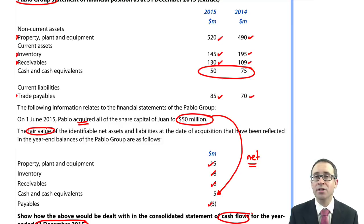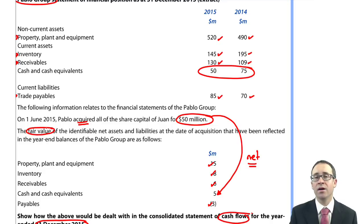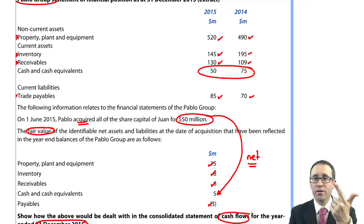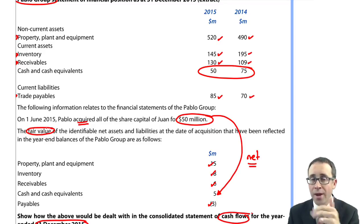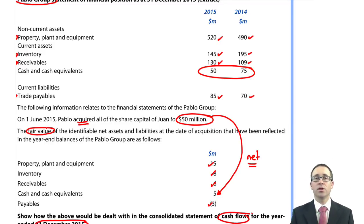Other than that, I'm going to leave you to revise and recap what we've covered so far — the dividend paid to the NCI, the dividend received from the associate, and the acquisition or disposal of a subsidiary. Next, we're going to work through a big comprehensive example. Thank you.